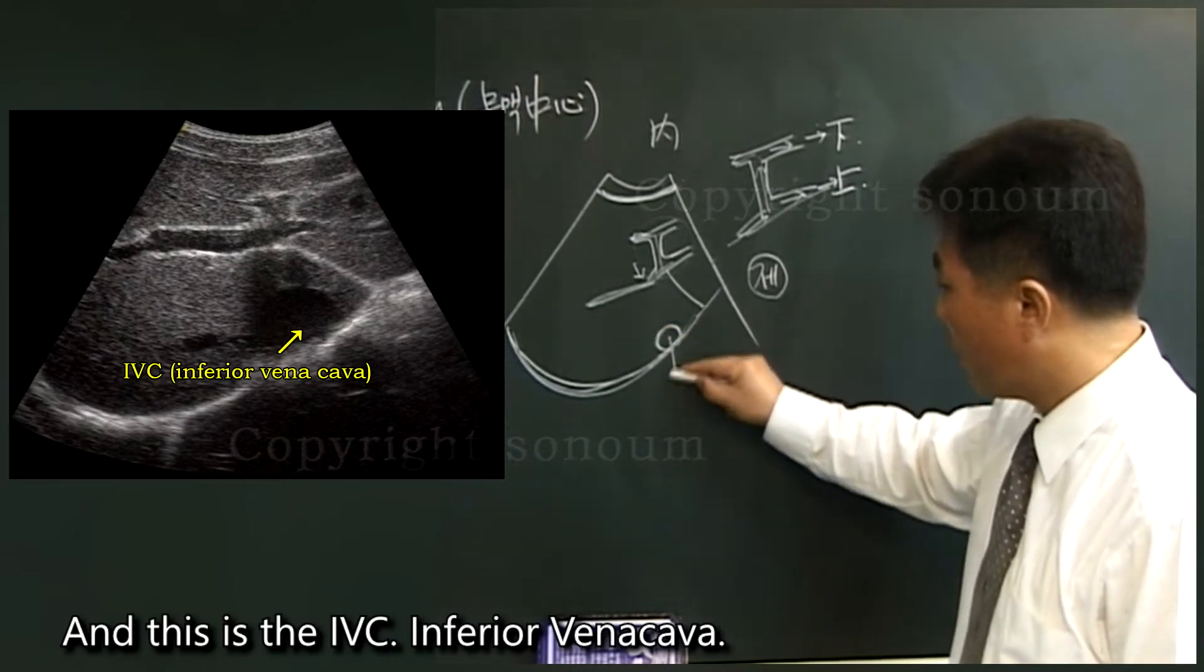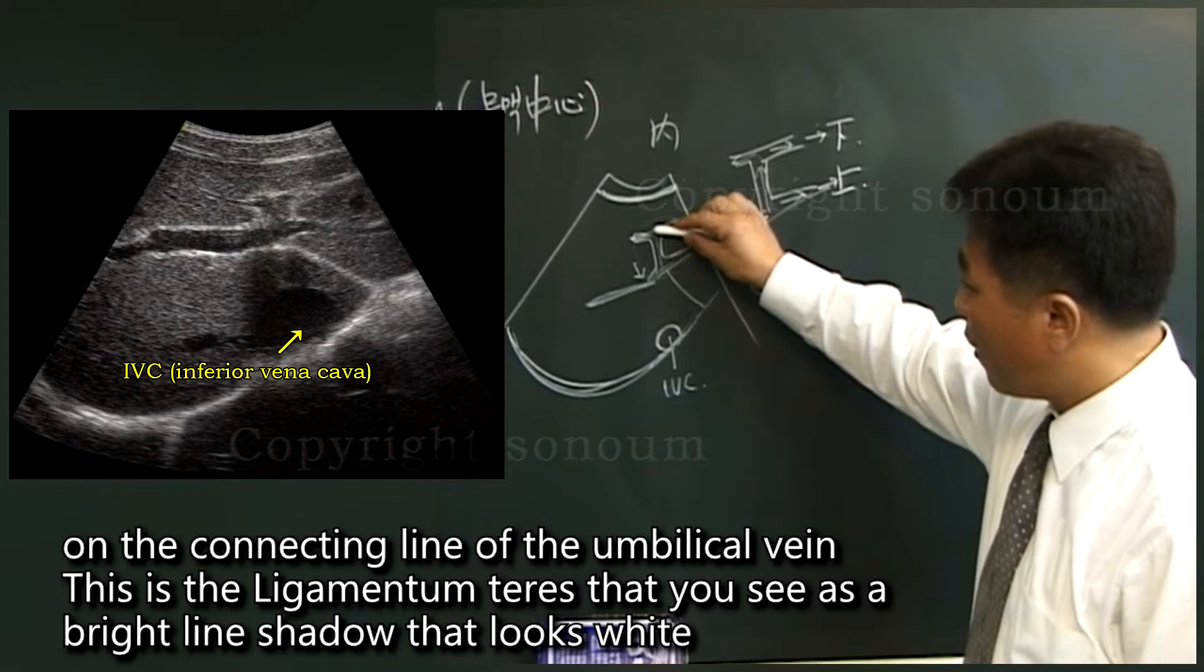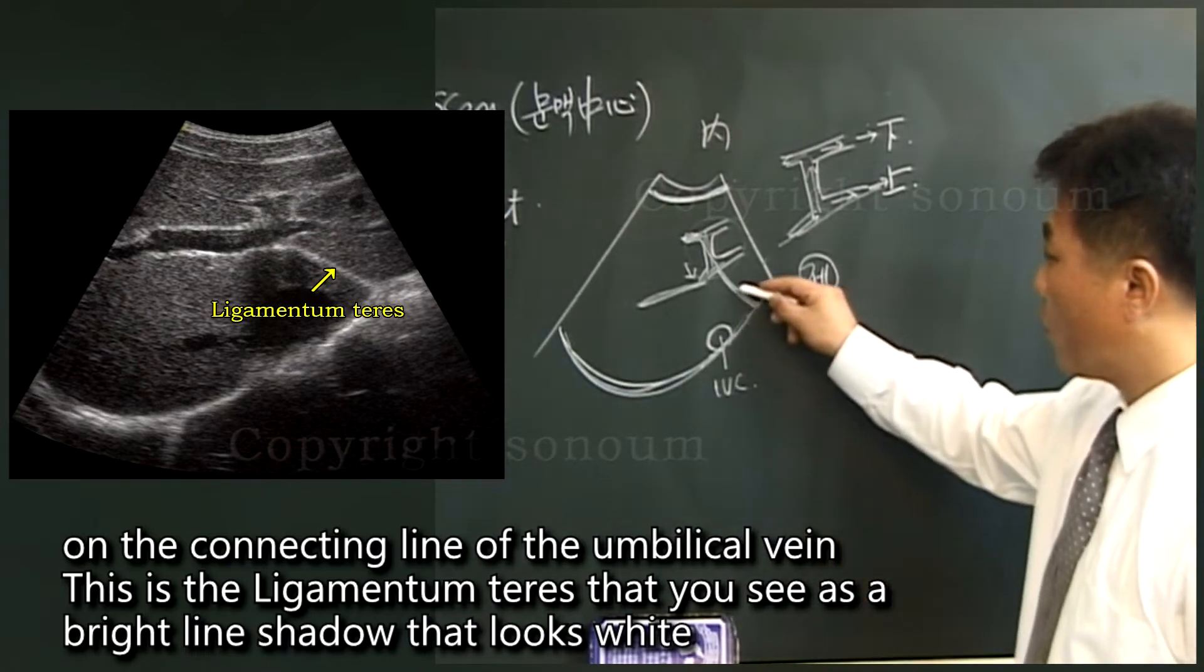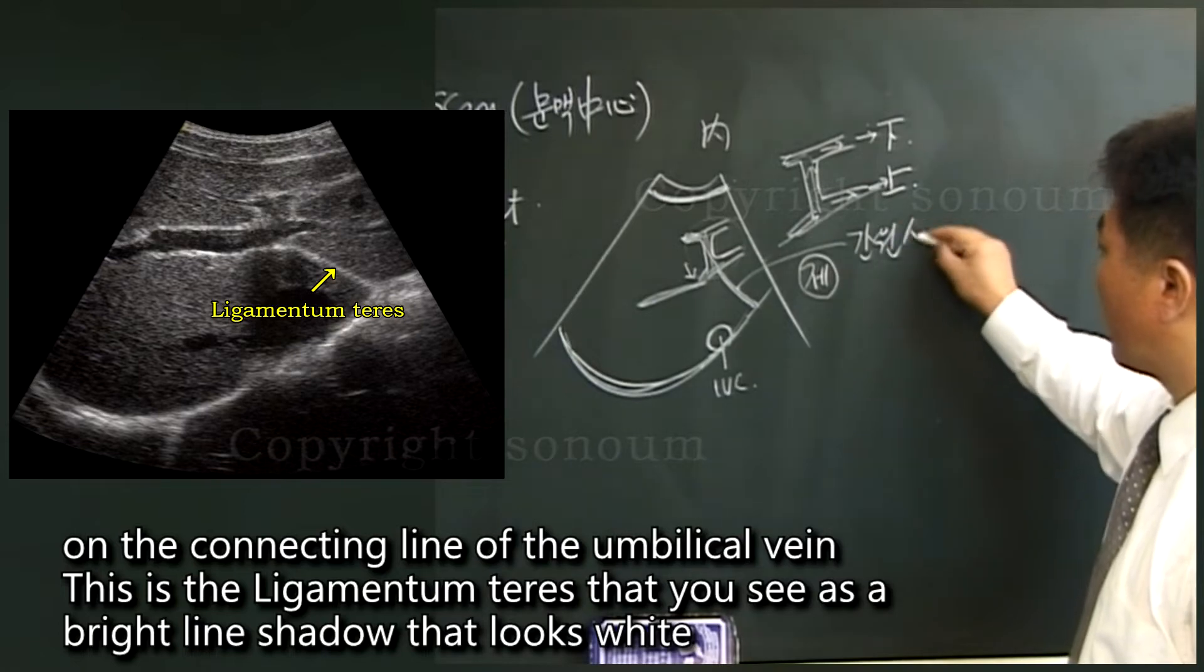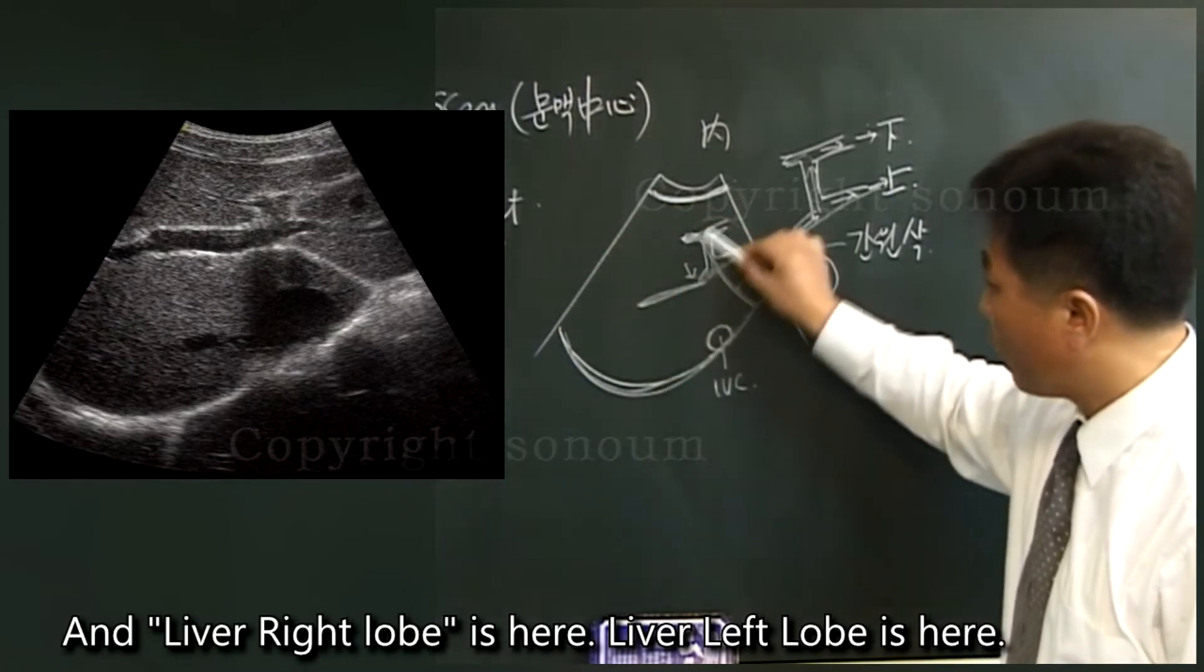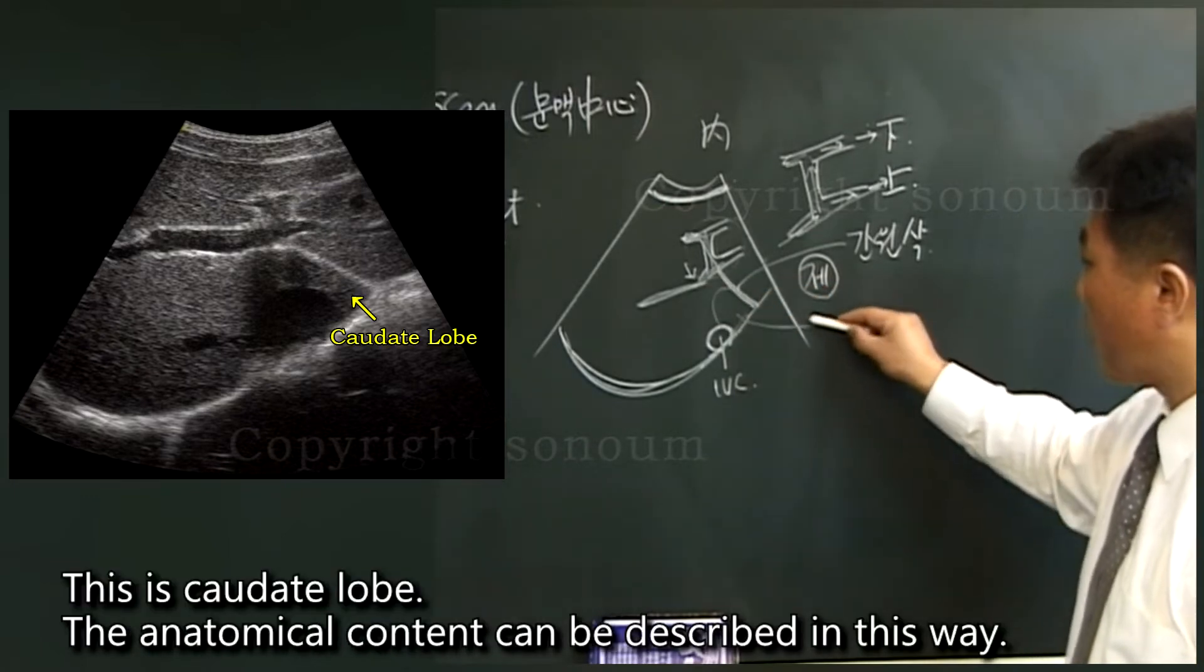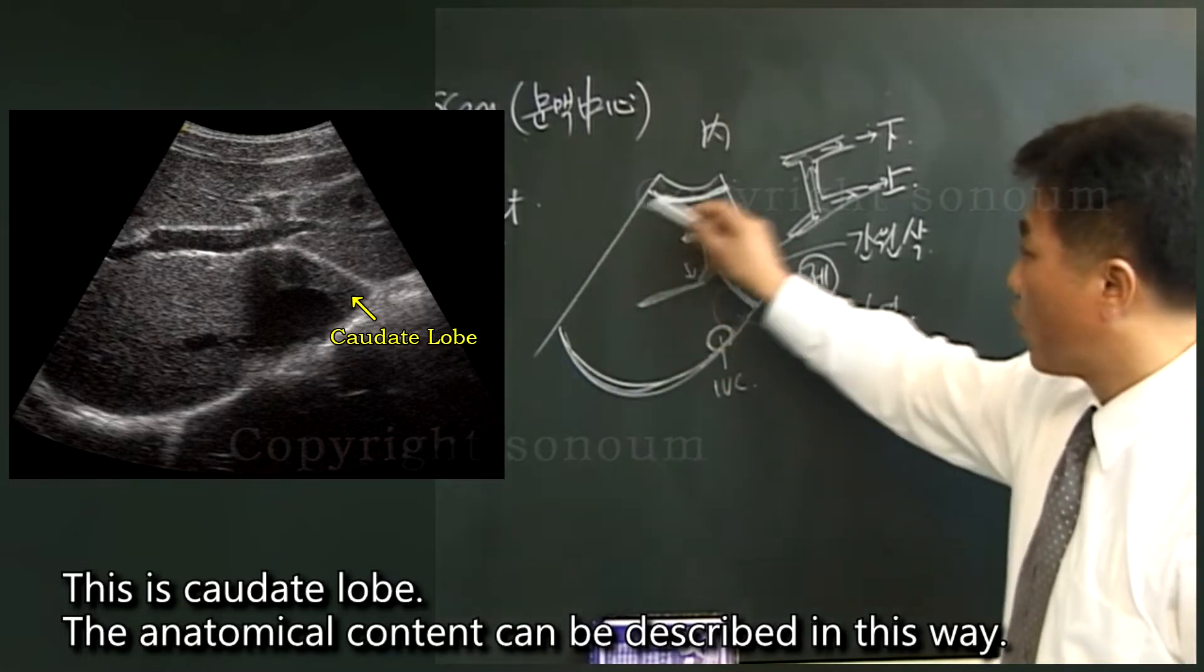And this is the IVC, inferior vena cava. On the connecting line of the umbilical vein, this is the ligamentum teres that you see as a bright line shadow, that looks white. And liver right lobe is here. Liver left lobe is here. Between IVC and ligamentum teres, this is caudate lobe. The anatomical content can be described in this way.